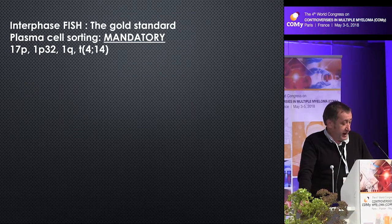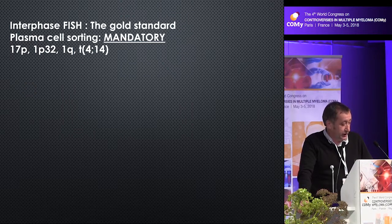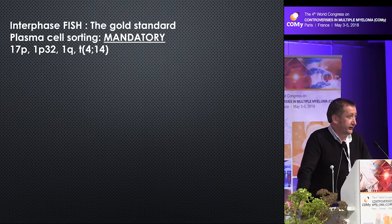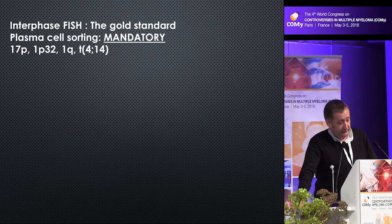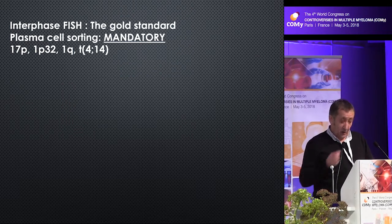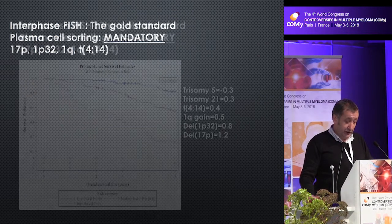To me, the most important abnormalities we have to look for are the 17p deletions, the 1p32 deletions, 1q gain, and translocation t(4;14). But again, we know that in the IMWG high-risk definition, we don't have the 1p — we have 17p, we have 1q and t(4;14). And we decided in IFM to try to revisit the performance of all these abnormalities in predicting patient outcome.